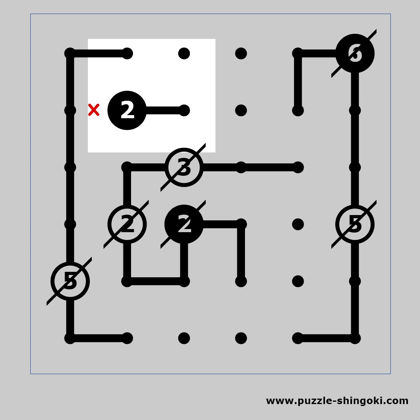We can also solve the last clue. The second line going out of the 2 must go up. The clue is solved, and the line going to the right should make a turn.